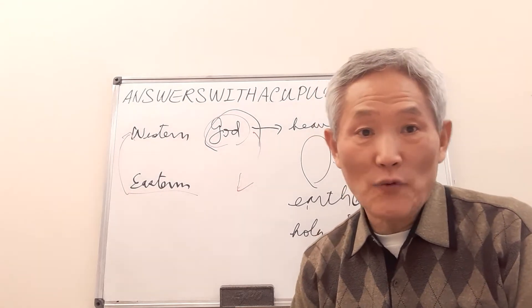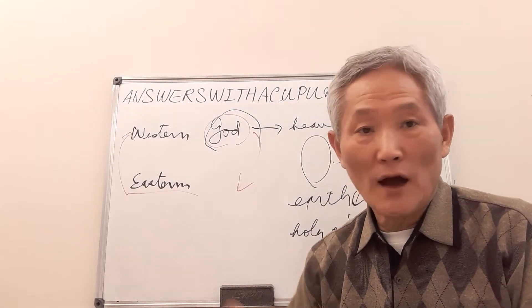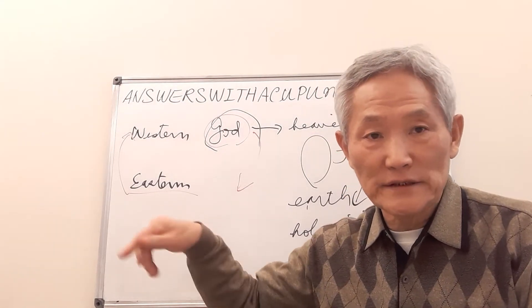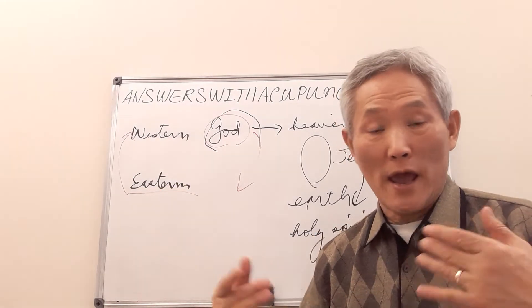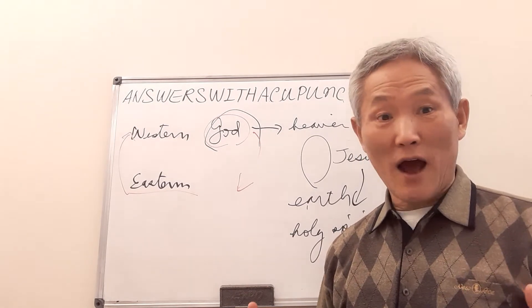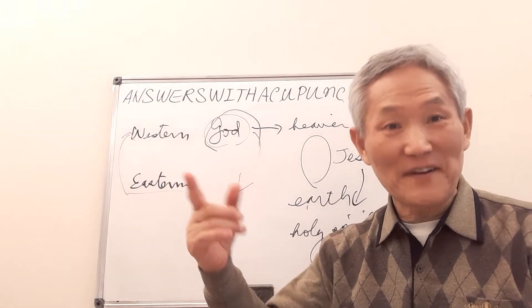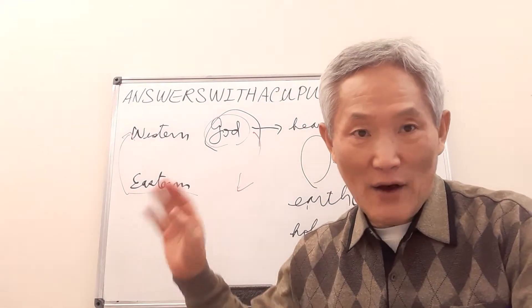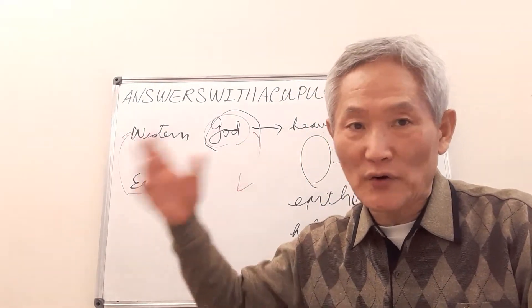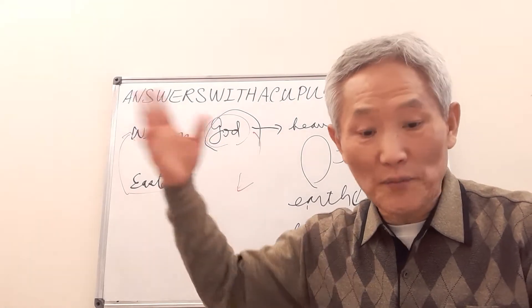And Taoism, same way. Confucianism is a little different, but Taoism, I am going to practice myself, I am not going to die, I am going to get the eternal life. Originally, Taoism purpose is that I am not going to die, I am going to become God.